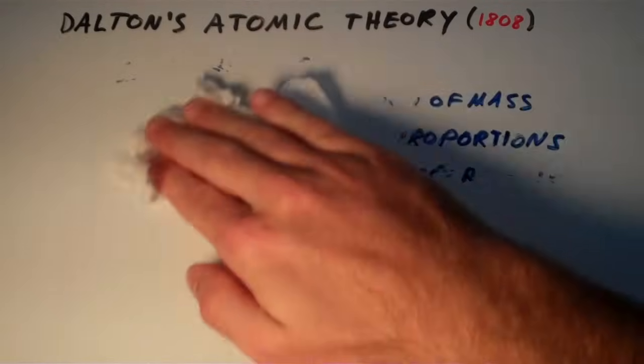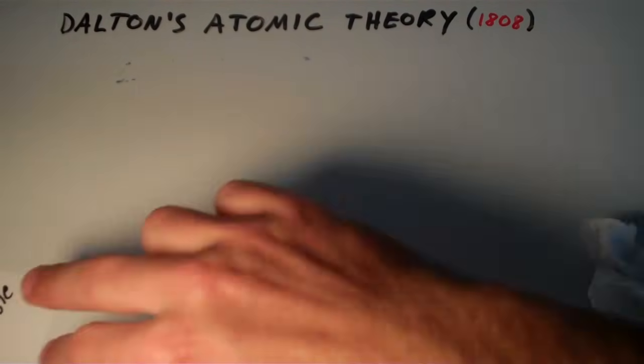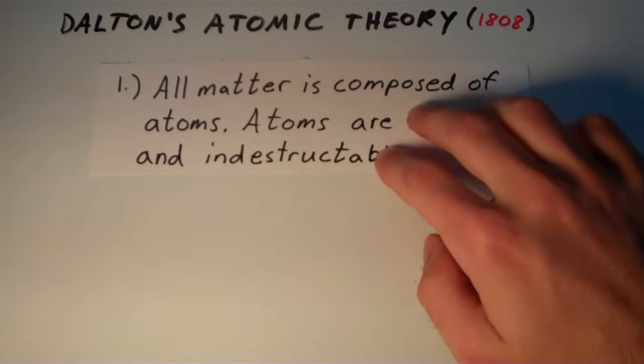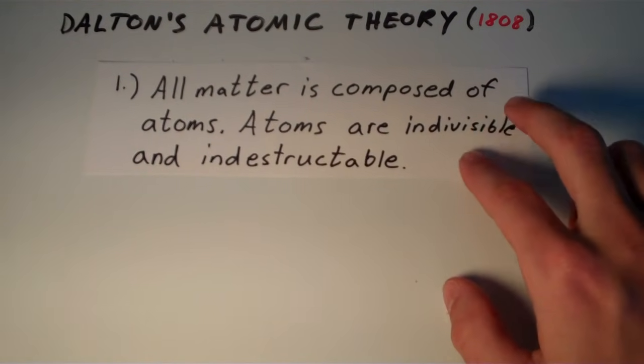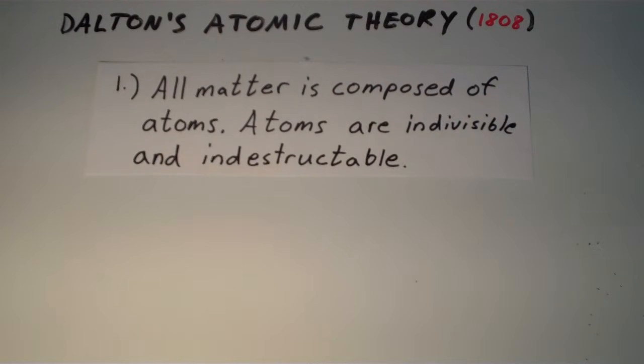So, the first part of Dalton's atomic theory says that all matter is composed of atoms, and that atoms are indivisible and indestructible. And this fact was accepted for a very long time after Dalton came up with this theory, but as technology increased and newer techniques became available for separation, it became known that the atoms are actually composed of subatomic particles,